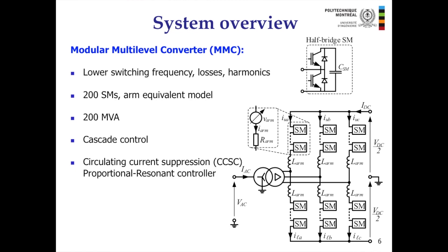As for the MMC, that is the basis for the HVDC link. The structure is shown on the right, and it is the most recent type of HVDC converter, with many benefits compared to traditional two-level or three-level converters: lower switching frequency, lower losses, and lower harmonic content. However, the structure is more complicated. In these simulations, I was using 200 sub-modules, so 201 levels, with an arm equivalent model, and the power was 200 MVA.